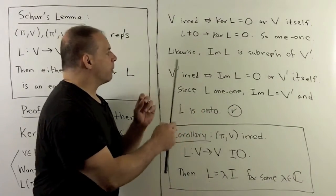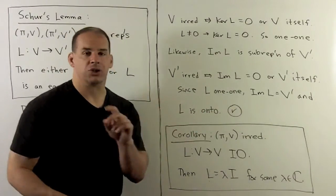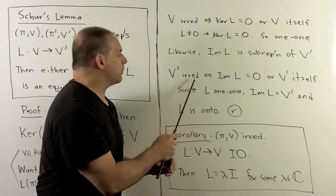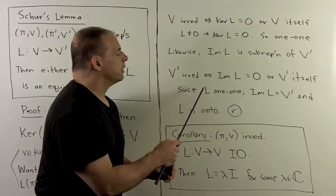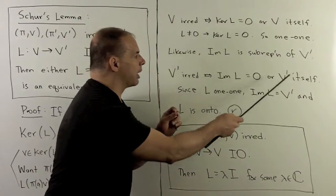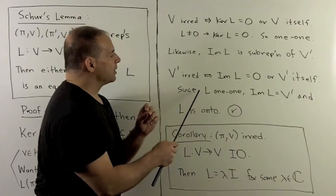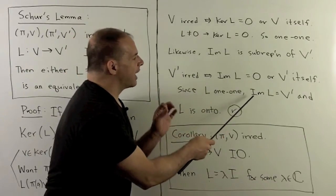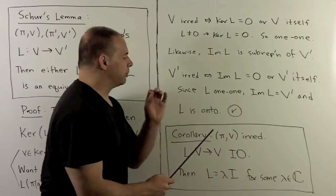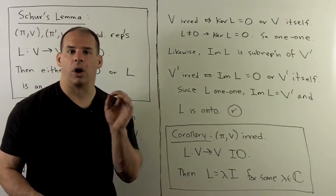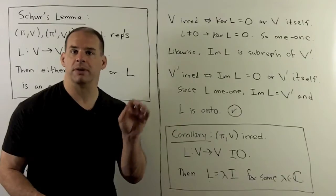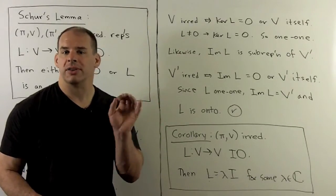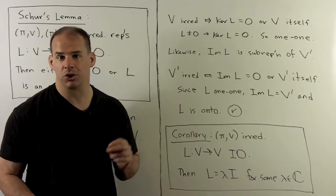Now we do the same argument for the image of L — I'll show that's a sub-representation of V prime. Again, there are only two options by irreducibility, so the image of L is zero or V prime itself. Since L is non-zero, it must be everything, so L is onto V prime. Because L is one-to-one and onto, it's an isomorphism of vector spaces, and we're assuming it's an intertwining operator, so L must be an equivalence. That's our result.